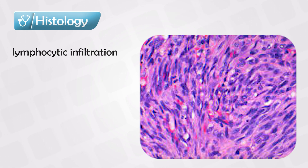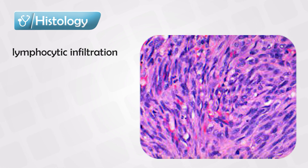Kaposi's Sarcoma and Bacillary Angiomatosis are often confused together because they look the same and they have the same demographic population. But we can differentiate them under the microscope because Kaposi's Sarcoma has lymphocyte infiltrates.